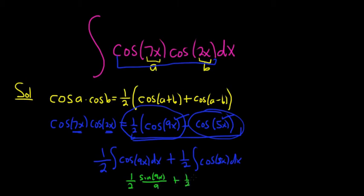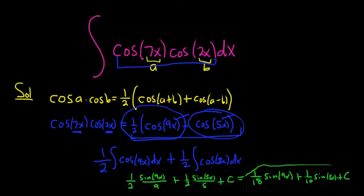Plus one-half sine of 5x over 5 plus c. So this is equal to—9 times 2 is 18—so one-eighteenth sine of 9x. And then plus—5 times 2 is 10—so one-tenth sine of 5x plus c. And that would be the final answer.